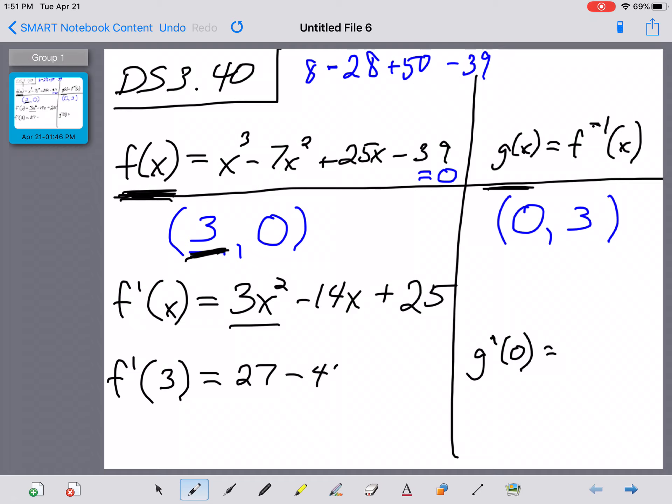Minus a 14 times 3, which is a 42, plus 25. And what does that do for us? The 27 minus 42 is a negative 15, plus 25. Looks like it's going to give us a 10.